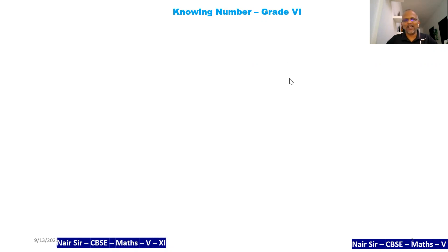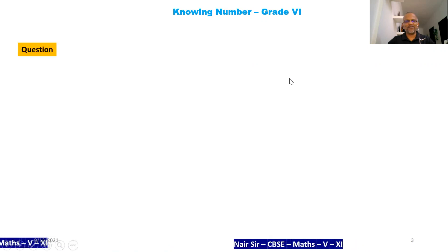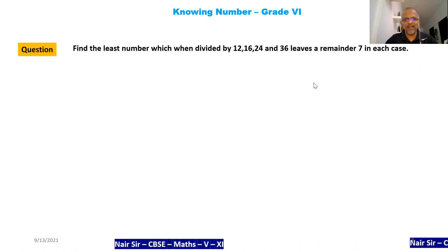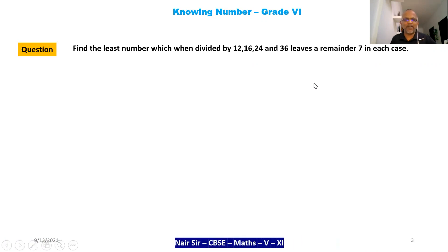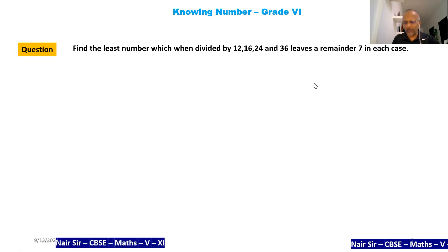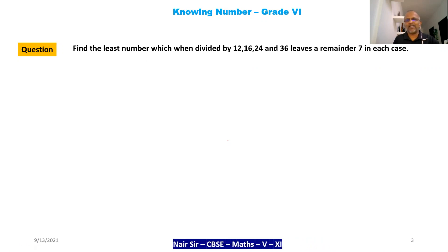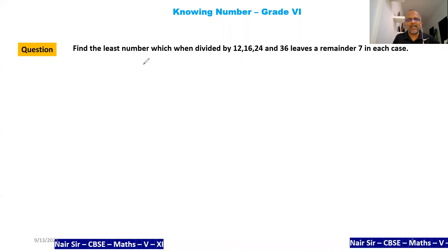Let's see what the question is. The question says: find the least number which when divided by 12, 16, 24, and 36 leaves a remainder 7 in each case.